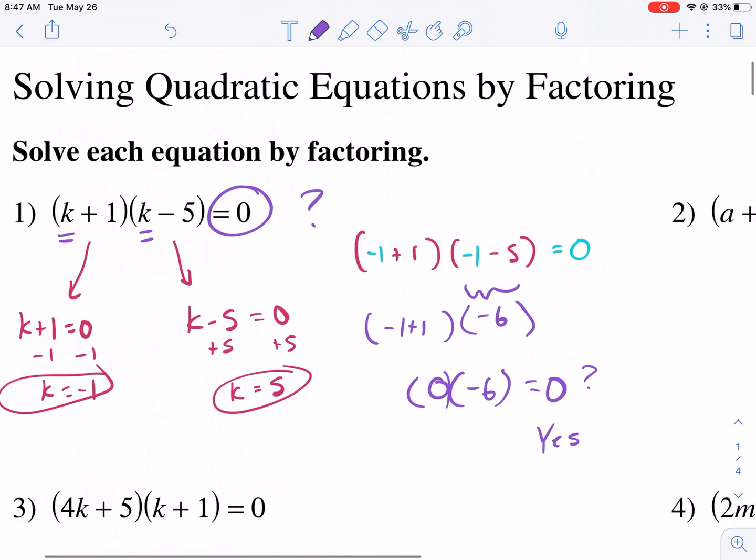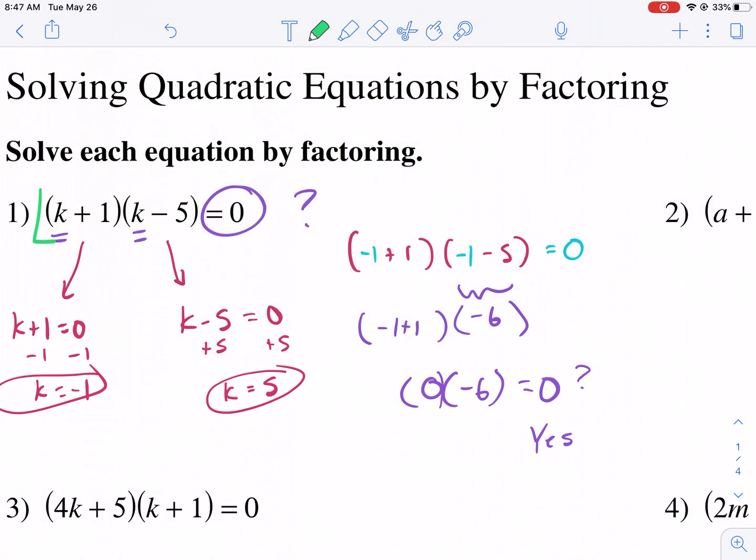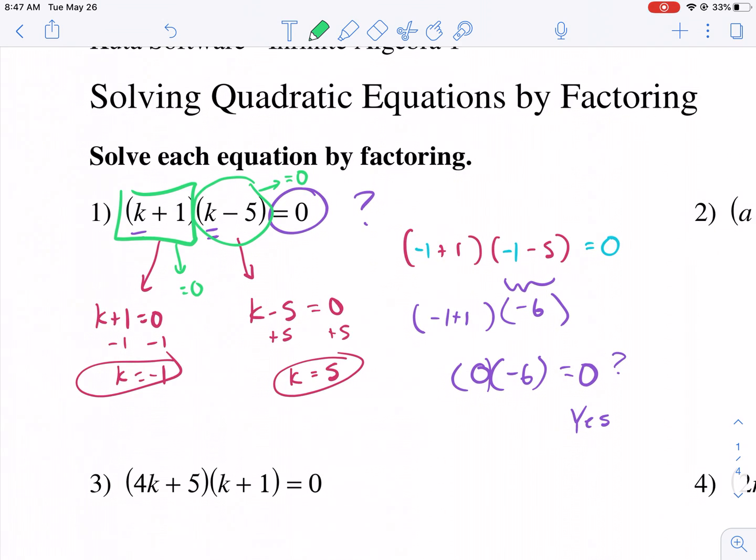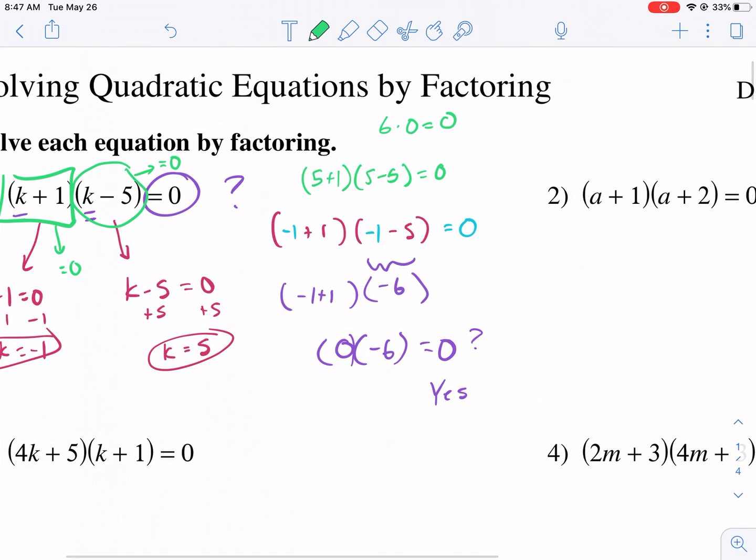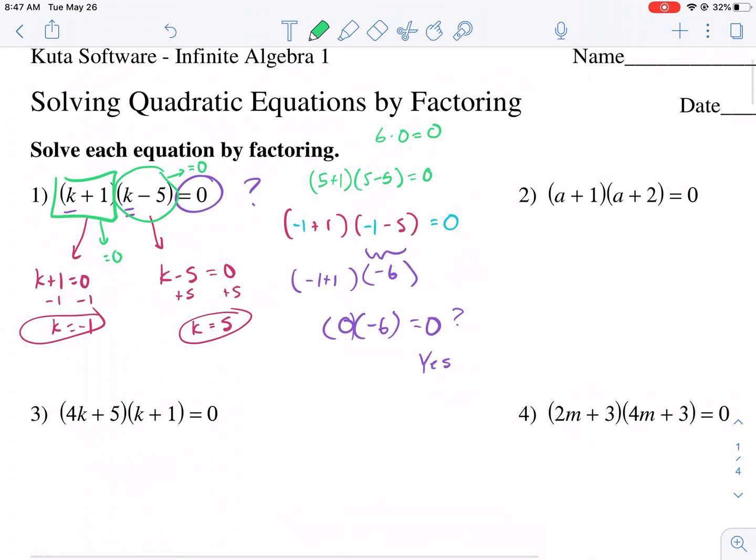Therefore, if this parenthesis goes to 0, or if this parenthesis goes to 0, it will make a true statement. For example, if we plug in 5, well, in this parenthesis, we'd get 5 plus 1, that's 6. But then in this parenthesis, we get 5 minus 5, that's 0. 6 times 0 equals 0. So if we get either binomial to equal 0, it will make a true statement. That's called the zero product property.